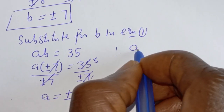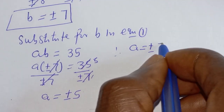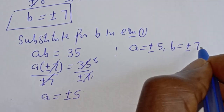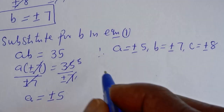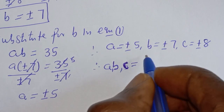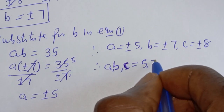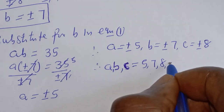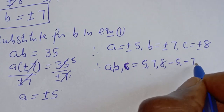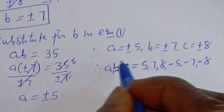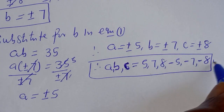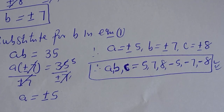Therefore A is equal to plus or minus 5, B is equal to plus or minus 7, and C is equal to plus or minus 8. Our final answers are (A, B, C) equal to (5, 7, 8) or (minus 5, minus 7, minus 8). This is the final answer. Before you leave, like, share, comment, and subscribe. Thank you, bye bye.